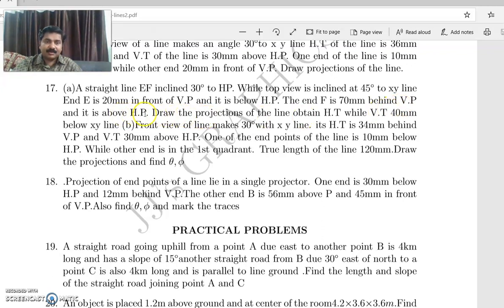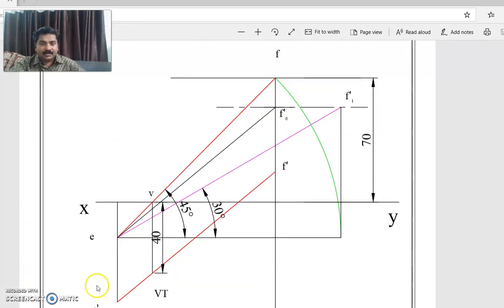And it is above HP. Draw the projections of the line, obtain horizontal trace while vertical trace is 40mm below XY line. So this is the question, there you go.